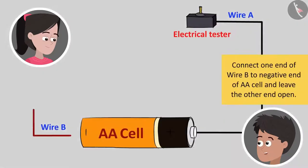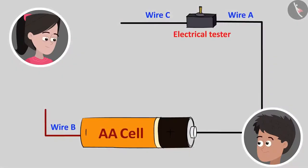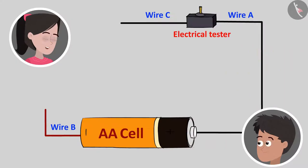Now connect one end of wire B to the negative end of the AA cell and leave the other end open. Okay, done. Finally, connect one end of wire C to the electrical tester and keep the other end open. And our circuit is ready.